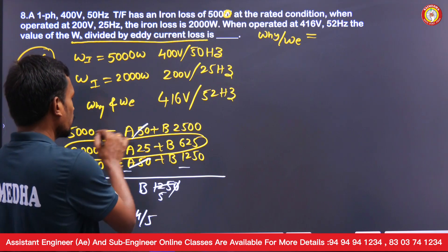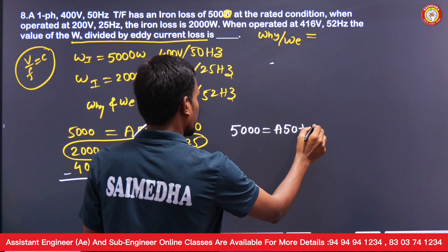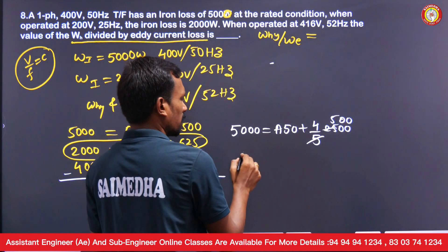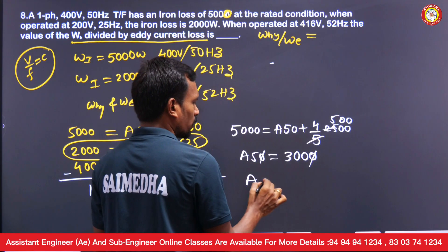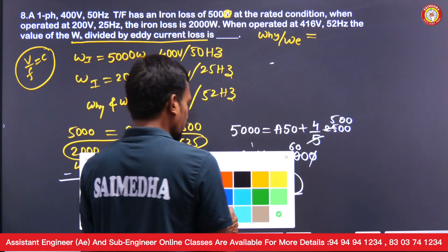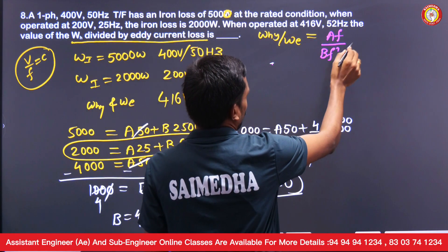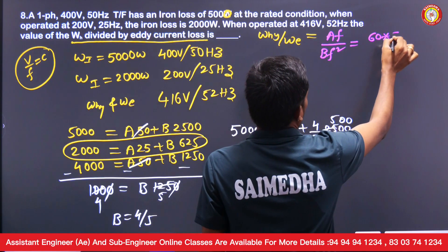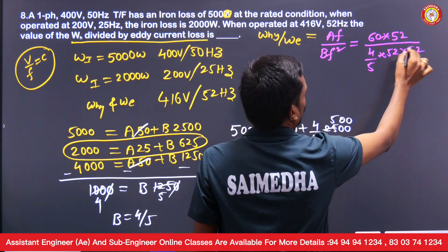Substituting b = 4/5 back: 5000 = a×50 + (4/5)×2500 = a×50 + 2000, so a×50 = 3000 and a = 60. Now for the ratio at 52 Hz: hysteresis loss = a·f = 60×52; eddy current loss = b·f² = (4/5)×52². One factor of 52 cancels.